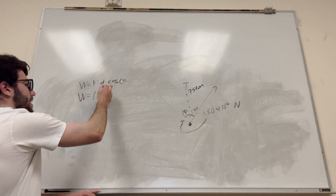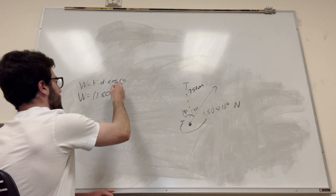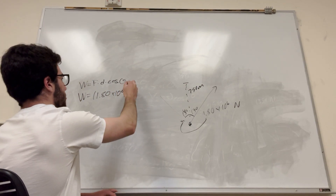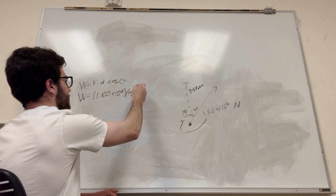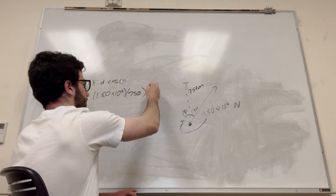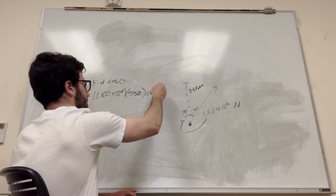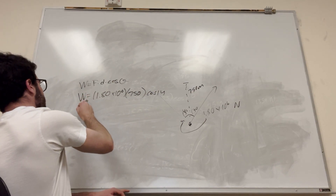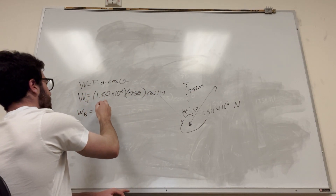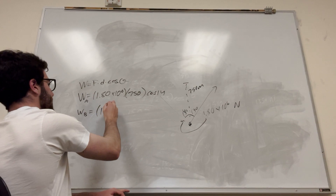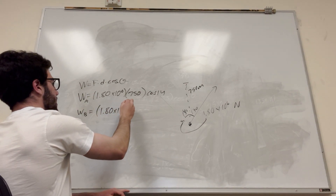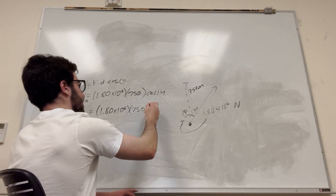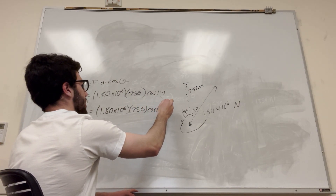So 1.80 times 10 to the 6 is the force, and the distance is 750. This one is at an angle of cosine of positive 14 degrees — that's work of A. And work of B is equal to 1.80 times 10 to the 6, same distance, and cosine of negative 14 degrees.